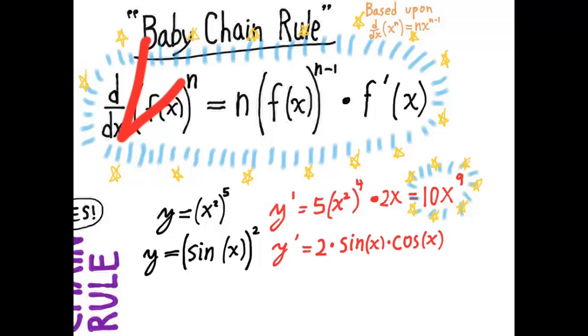You see the chain rule factor in this case is cosine of x because that's the derivative of sine of x.